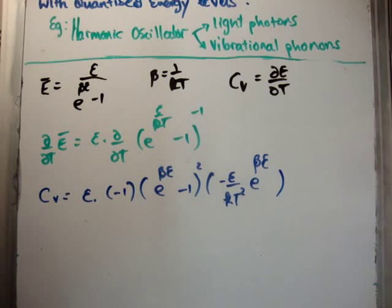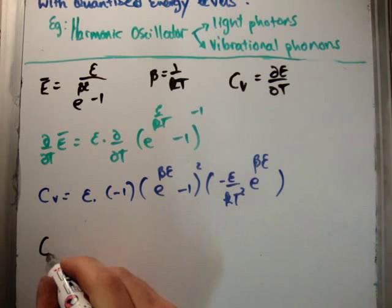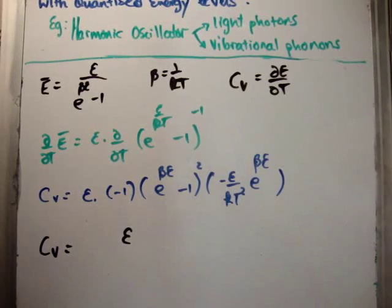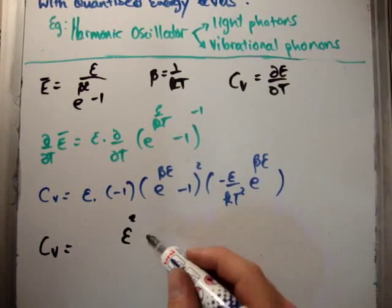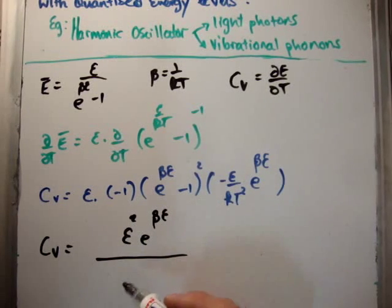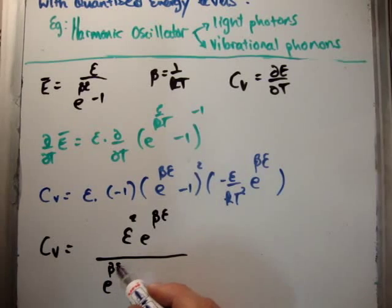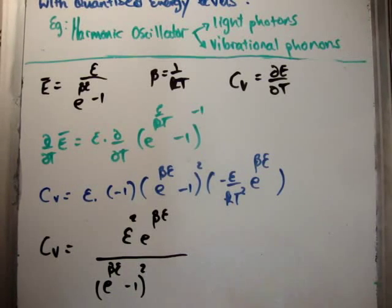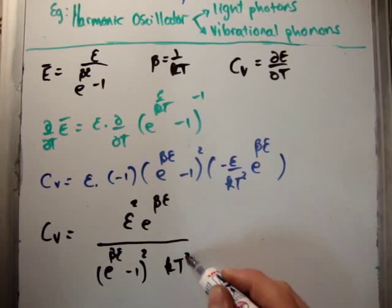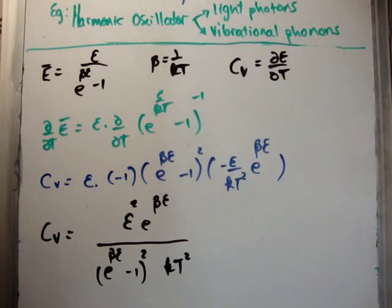It's just a bit of differentiation. There's nothing particularly interesting about that. So let's just rearrange it. The heat capacity at constant volume is going to be positive epsilon squared. Then we're going to have e to the beta epsilon. And we're going to have a factor of e to the beta epsilon minus 1 to be squared. And we're also going to have this factor of k times T to be squared.